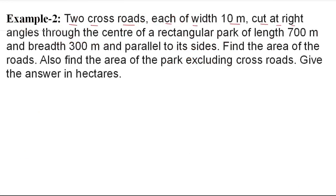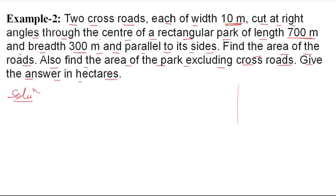The next example: A rectangular park of length 700 m and breadth 300 m has two square roads, each of width 10 cm, cut at right angles through the center — one parallel to the length and one parallel to the breadth. Find the area of the roads and also the area of the park excluding the crossroads. Give the answer in hectares.